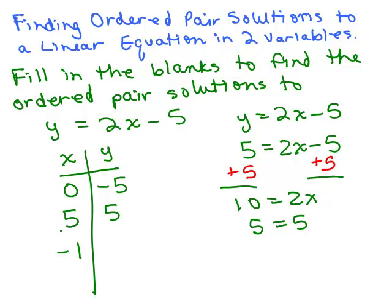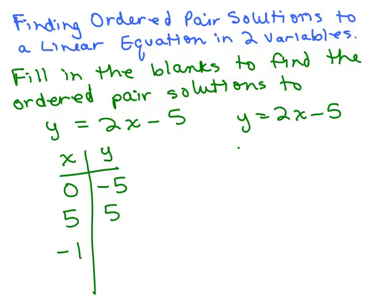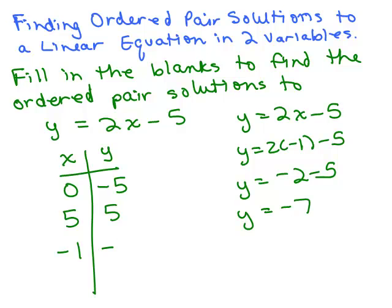Last one, we're going to plug in negative 1 for x. So we have 2 times negative 1 minus 5. Y would be negative 7. So what we found are 3 ordered pair solutions we've filled in the blanks.